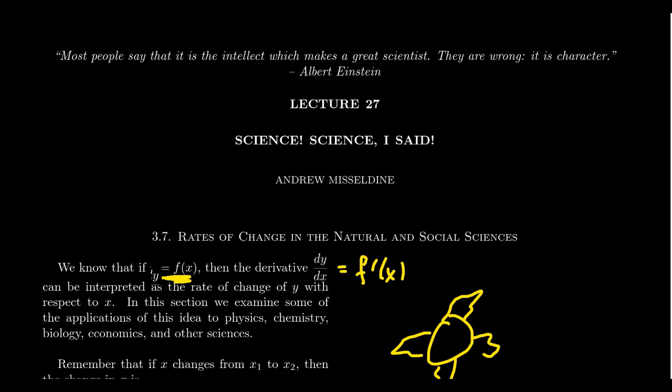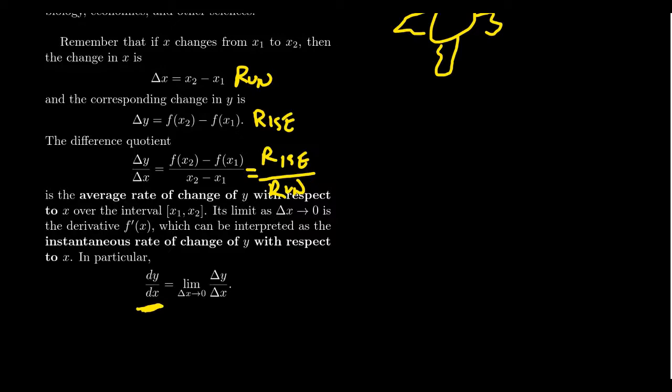So whenever the function Y equals F of X has a specific interpretation in one of the sciences, and this could be physics, chemistry, biology, whatever, its derivative, that is dy over dx, will have a specific interpretation as the rate of change of that function value.